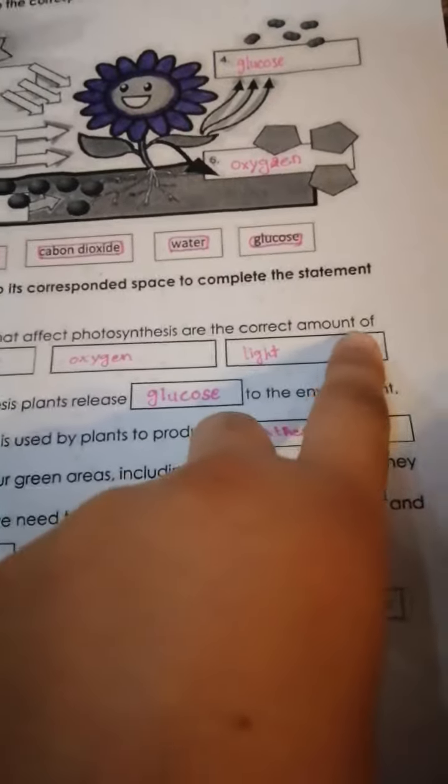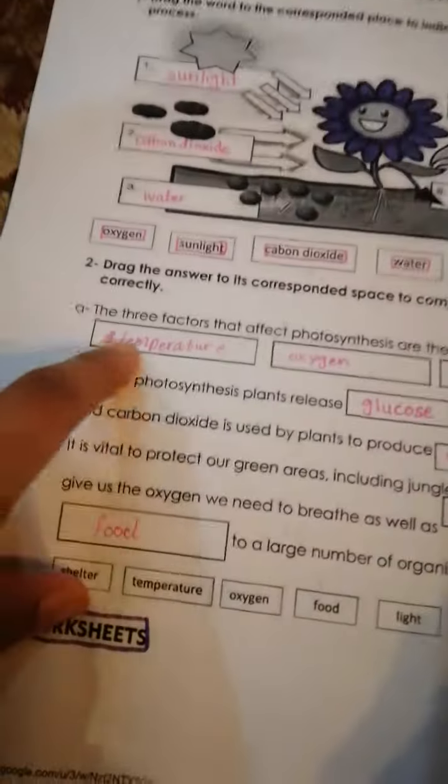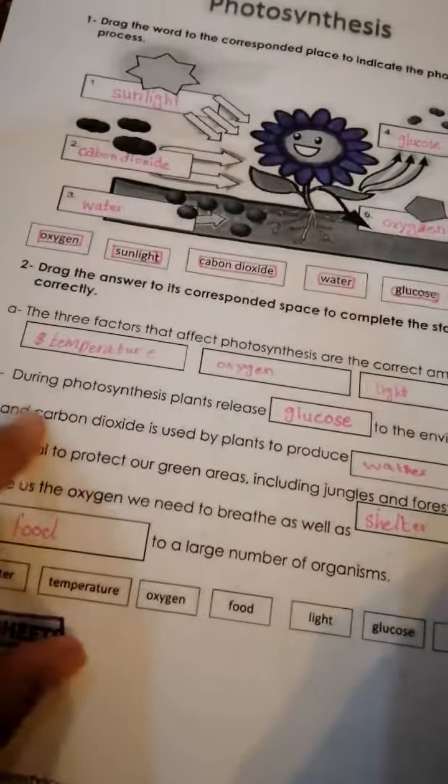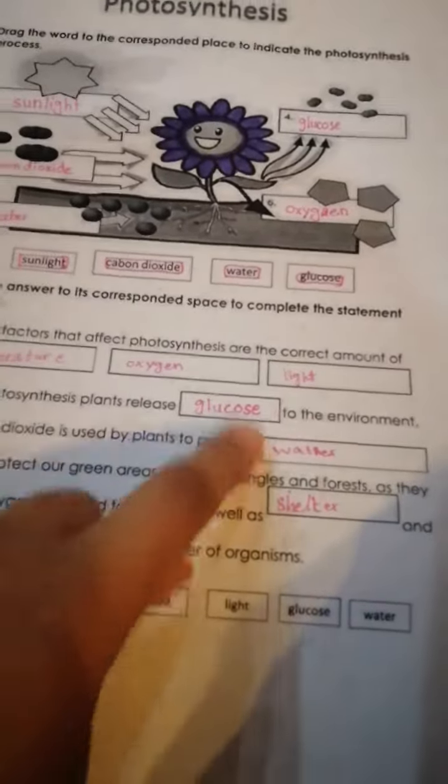The correct amount of temperature, oxygen, and light. During photosynthesis, plants release glucose to the environment, and carbon dioxide is used by plants to produce food.